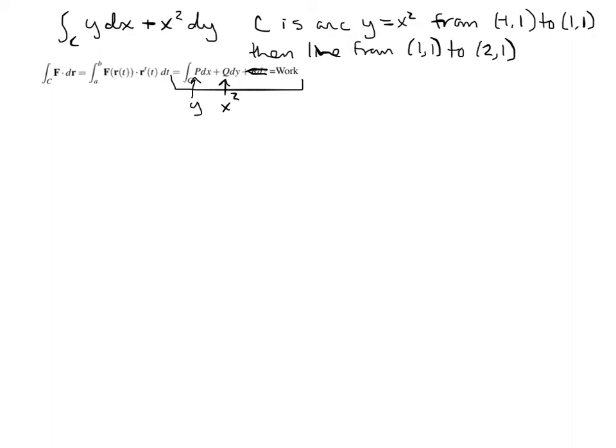All right, so we're looking at this second one, and the idea here is that we want to plug in so that we can get all t's, just t's in there, so then we can integrate. So we've got these different curves, and notice that we have two different curves. We have one curve that is the y equals x squared curve, and then we have a second curve that is the line. So we're going to have to do two different integrals here and add them together because of the difference in curves. For every single one of these, we have to get a parametization because we need an x equals, and we need a y equals in order to plug in to all of this.